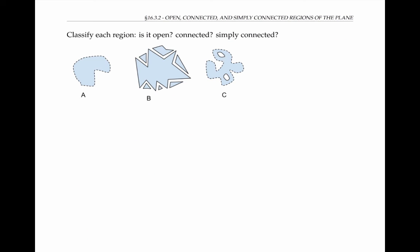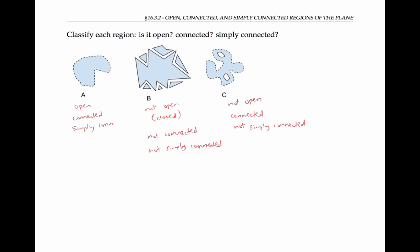Please pause the video and decide for each region: is it open? Is it connected? And is it simply connected? The first region is open, connected, and simply connected. The second region is not open — in fact, it's closed because it contains all its boundary points. It's not connected; I think it can be divided into seven different components. And because it's not connected, it's not considered simply connected either. The third region C is not open — it contains some of its boundary points, although not all of them, so it's not closed either. It is connected, but it's not simply connected because it has two holes. If I draw a simple closed curve that surrounds either one or both of those holes, that curve will surround points that are in the white part and not in the shaded region.